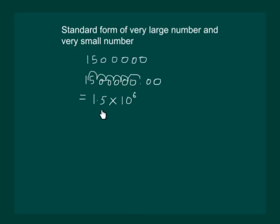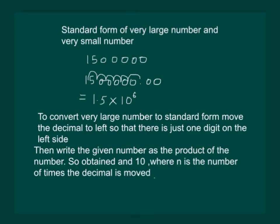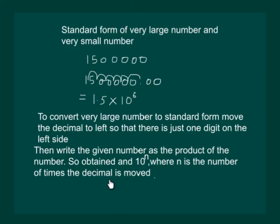And 1.5 into 10 raised to the power 6 is the standard form of 15 lakhs. Hence, we state that to convert a very large number to standard form, move the decimal to the left so that there is just one digit on the left side. Then write the given number as the product of the number so obtained and 10 to the power of n, where n is the number of times the decimal is moved.